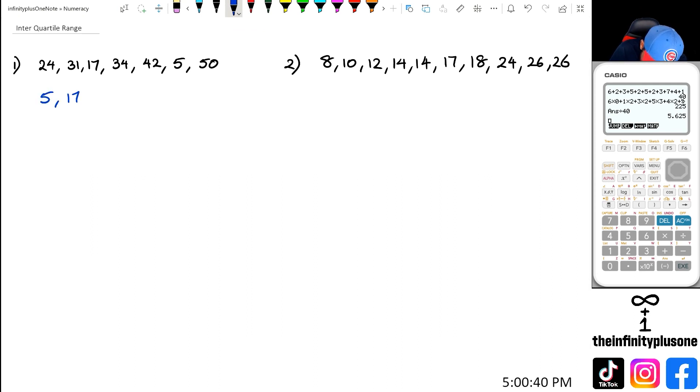So we've got 5, 17, 24, 31, 34, 42, and 50. Now looking at it, the median is the middle. If you're not sure of how I got the median, feel free to go and check the previous videos in this series because they go through thoroughly how to find the median and lower quartile.